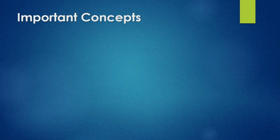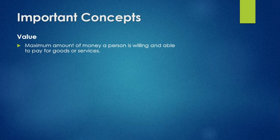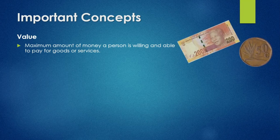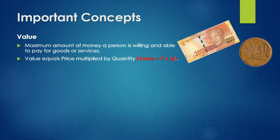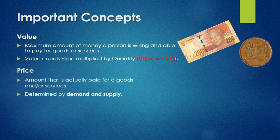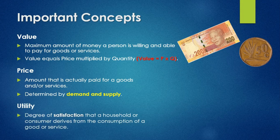There are some important concepts we need to know as we carry on in this topic. The first is value — value looks at the maximum amount of money that a person is willing and able to pay for a good, expressed in rands and cents. The formula is: value equals price times quantity. The next concept is price, which is the actual amount paid for a good or service, determined by the interaction between demand and supply.